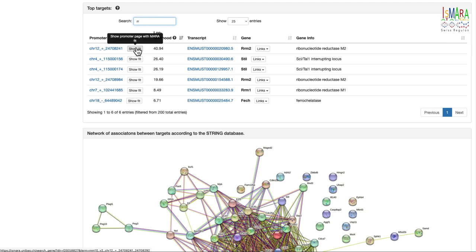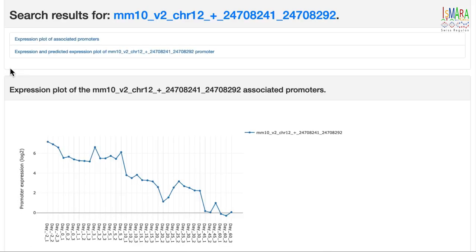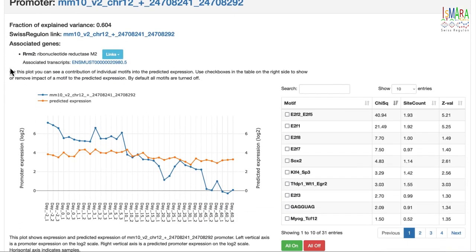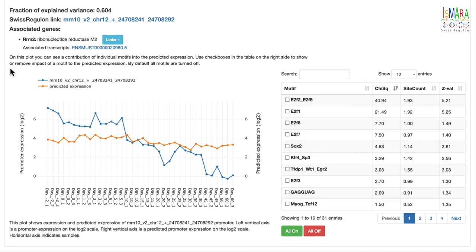If you click this show fit button of a target, you are taken to a page which shows the promoter's observed expression profile, which lets you explore how individual motifs affect the predicted expression profile. The orange curve by default shows the predicted expression without influence of any motifs, and by clicking on the All On button, one can see the predicted expression profile of the full ISMARA model.